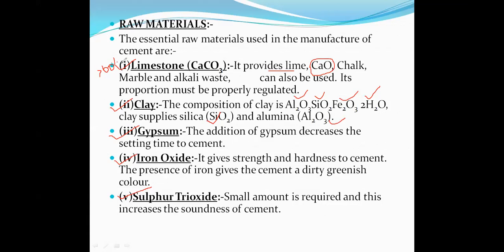To summarize the raw materials of cement: number one is limestone, number two is clay containing Al2O3, SiO2, and iron oxide, number three is gypsum, and number four is iron oxide.